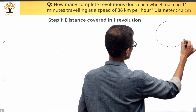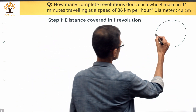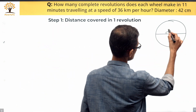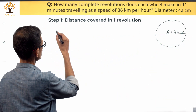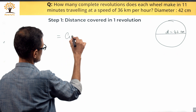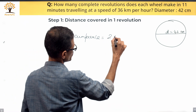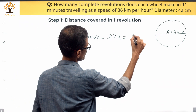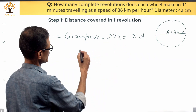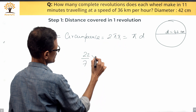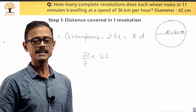The distance covered in one revolution is nothing but the circumference of the circle. We have data about the diameter, which is 42 centimeters. Distance covered in one revolution equals the circumference. The formula is 2πr, which you can also think of as π times d, since 2r equals diameter. Let's take π as 22/7, times 42.